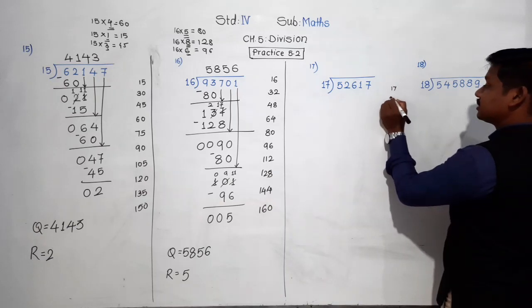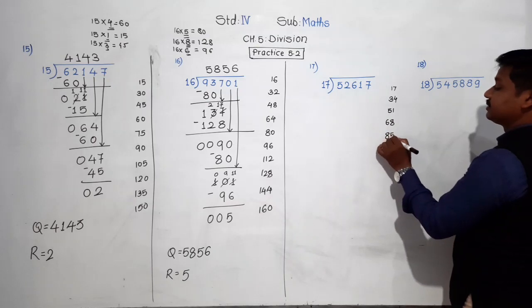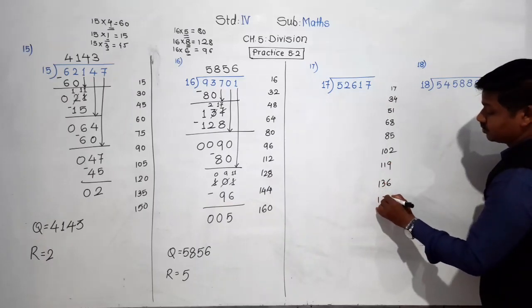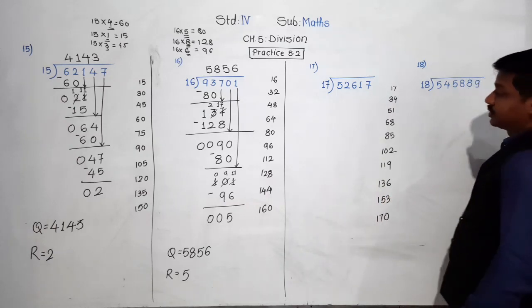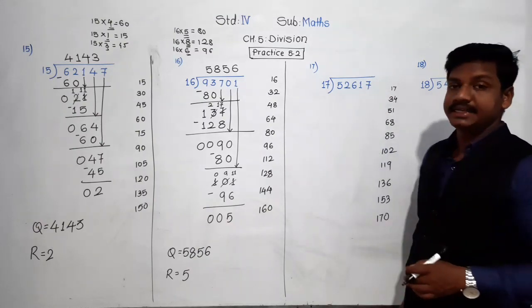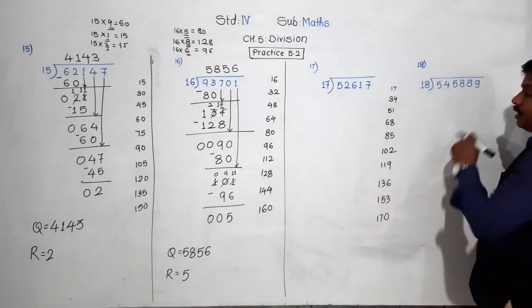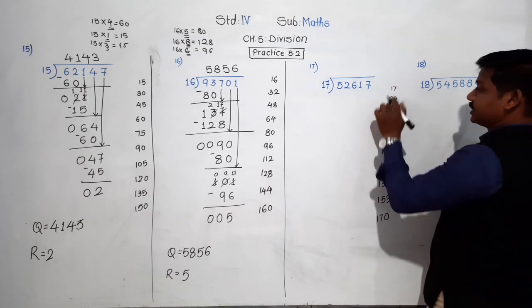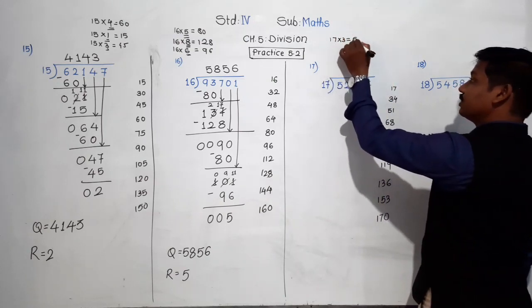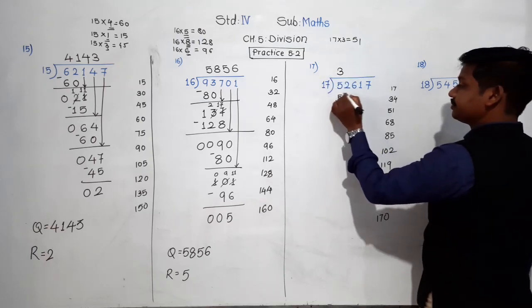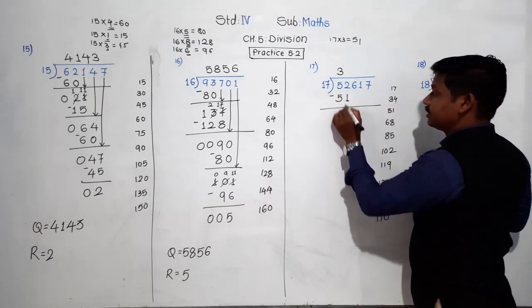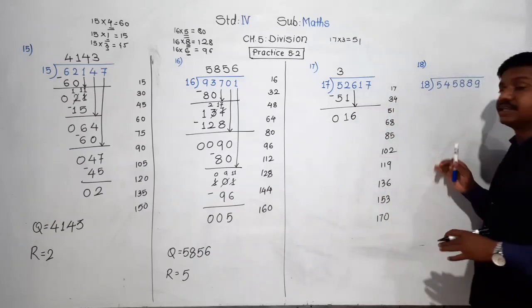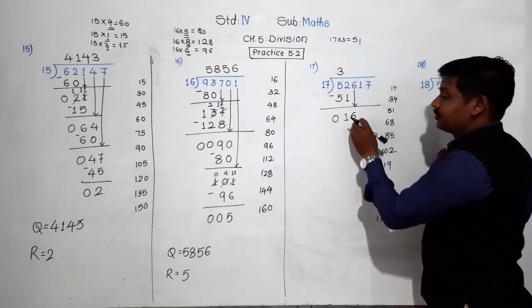Let's write the table of 17 first: 17, 34, 51, 68, 85, 102, 119, 136, 153, 170. Now divide the first two digits — 52. Is there 52 in the table of 17? No, but there is 51, which is smaller than 52. So 17 threes are 51. 3 goes in the quotient. Subtract: 2 minus 1 is 1, 5 minus 5 is 0. Bring the next digit 6 down — the number becomes 16.